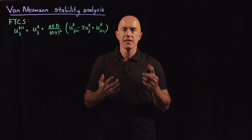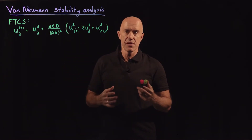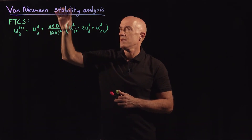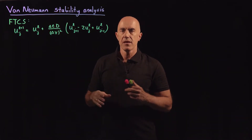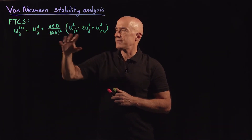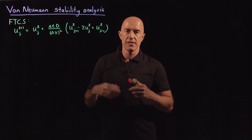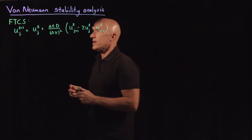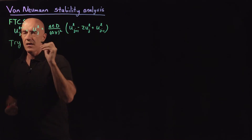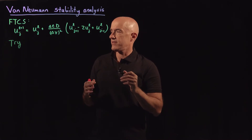It's interesting as a student to see how to analyze a scheme for stability. The traditional analysis is called the von Neumann stability analysis. I'll show you now, using this forward time centered space scheme, how too large a time step can lead to an unstable scheme.